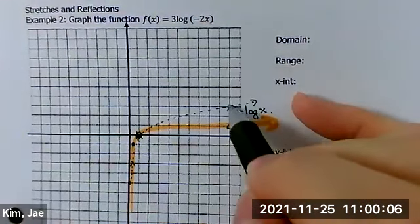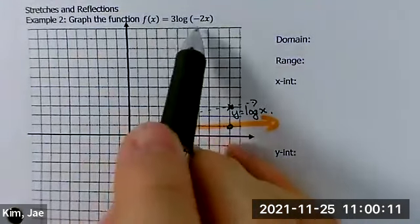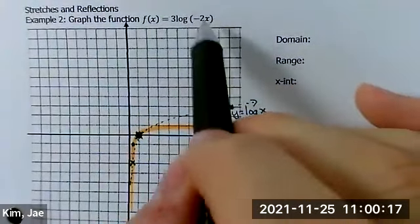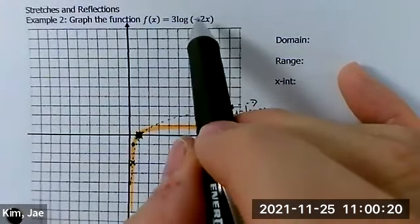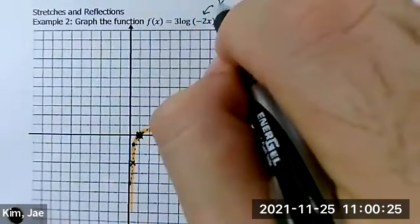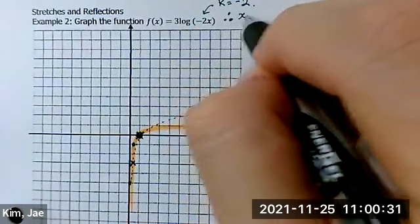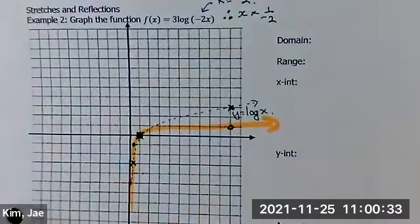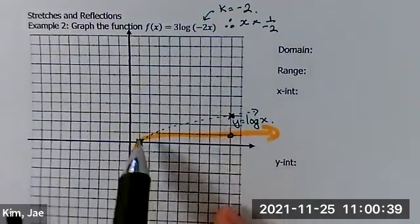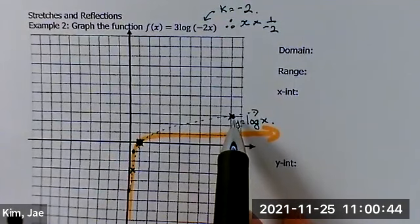Next, each of these x marks are going to be multiplied by, or quote-unquote multiplied—it is going to be horizontally compressed by a factor of... So that's going to be the k value is negative 2. Therefore, all the x values are going to be multiplied by a factor of negative 1 over 2.